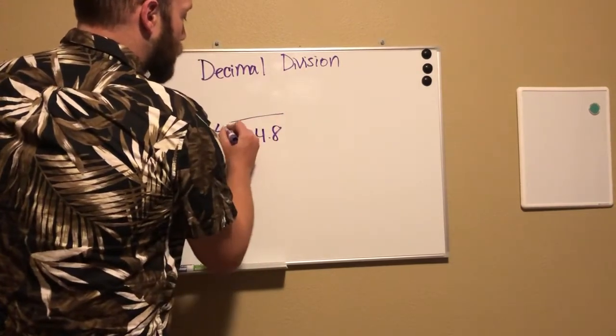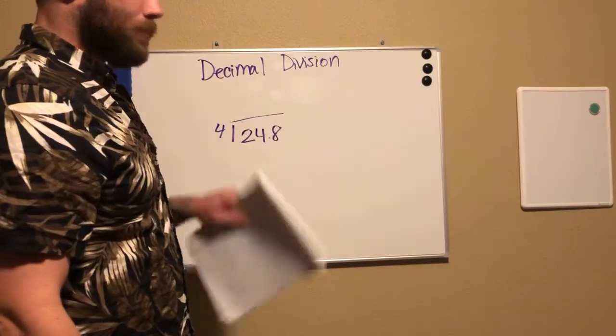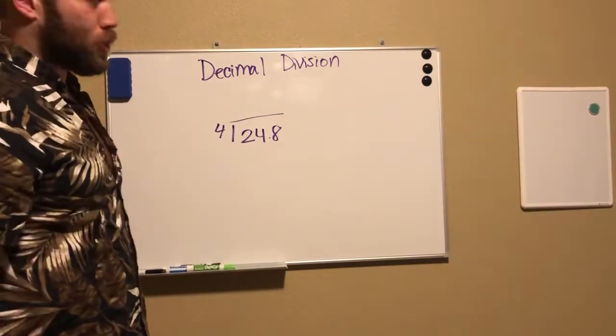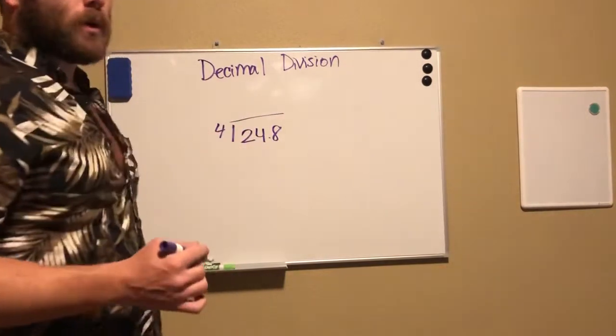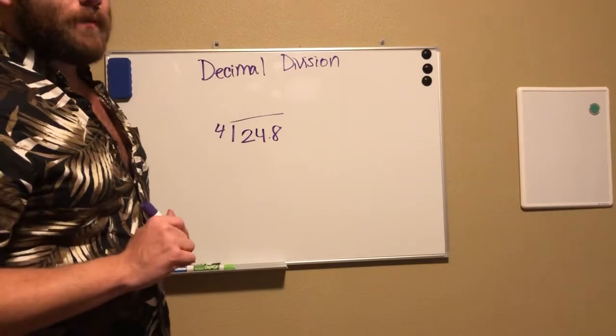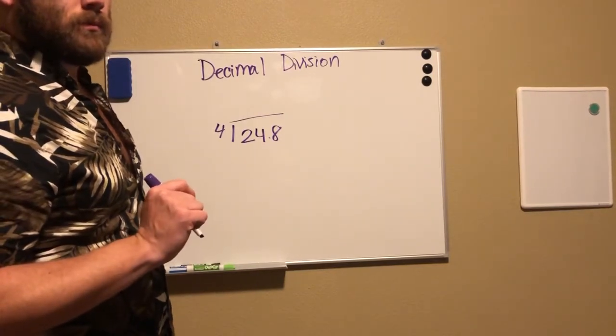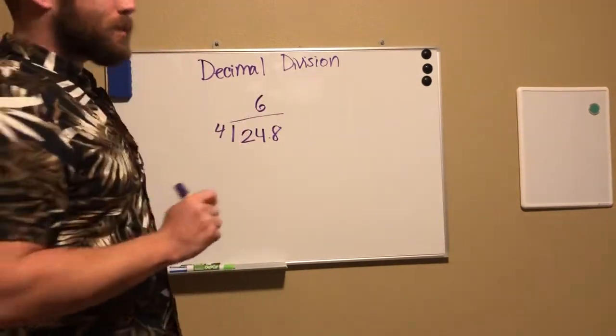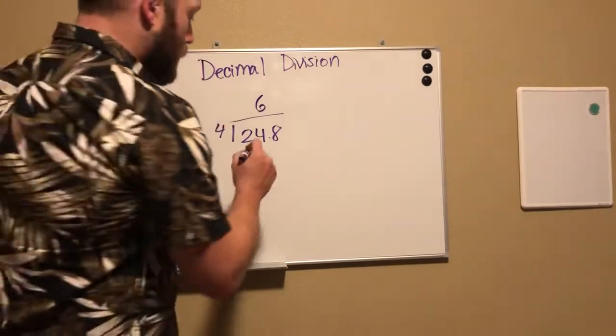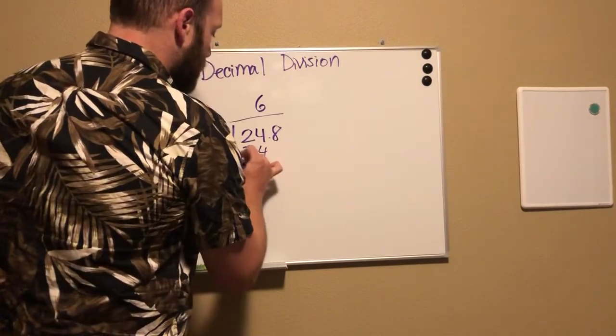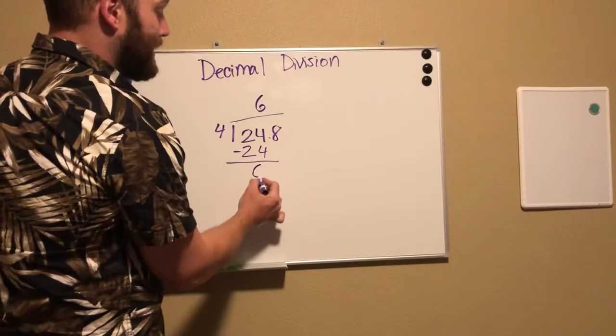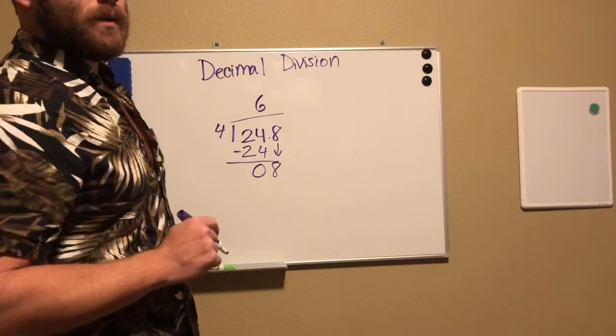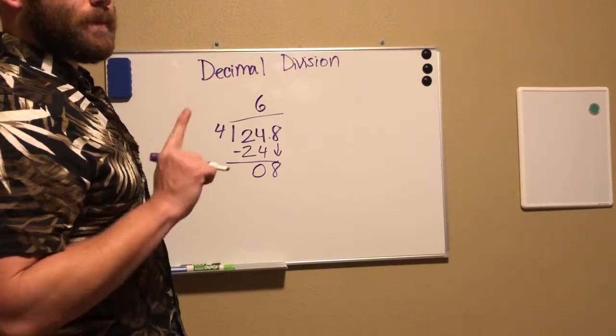All right, so first step: can two be divided by four? No, it can't, so we need to turn it into twenty-four. What is twenty-four divided by four? That's right, it's six. So we put our six up here because what's six times four? Twenty-four. Good job. Put it down here. We know twenty-four minus twenty-four is zero. Bring down our eight. Eight divided by four, what is it? Ready? Yes, two.